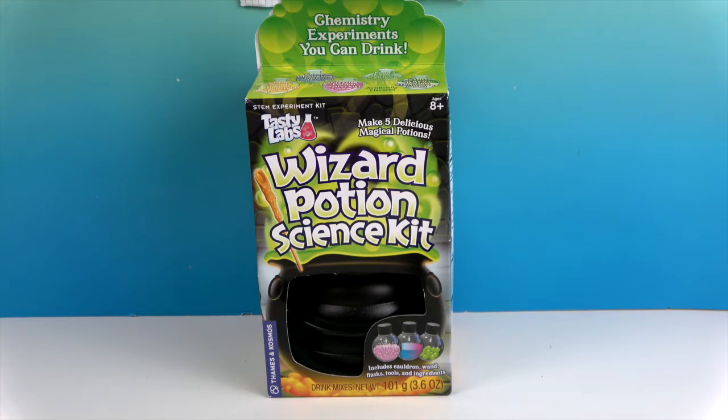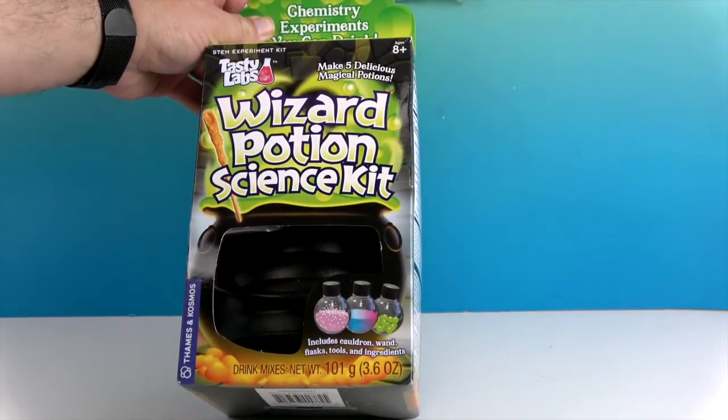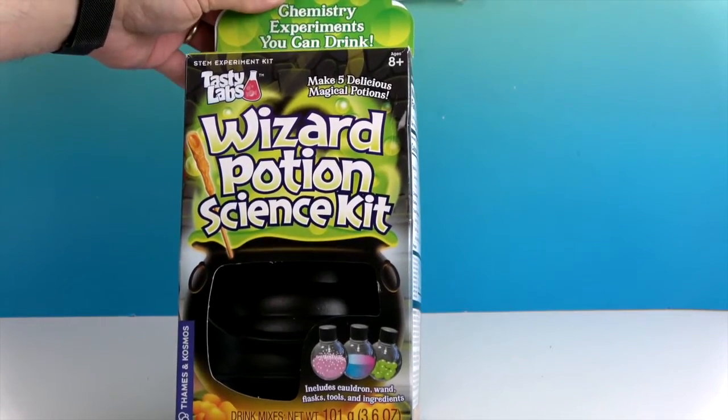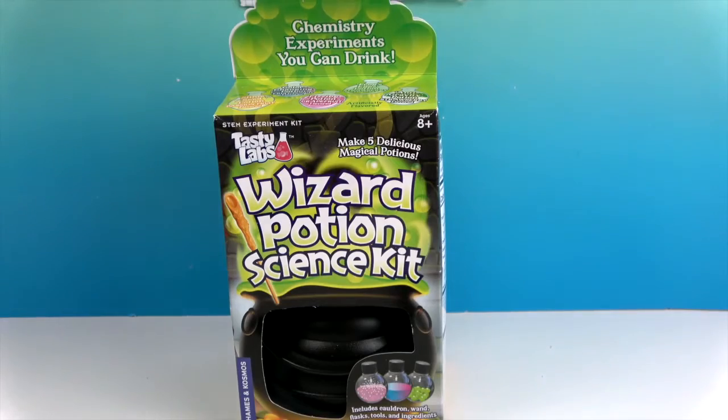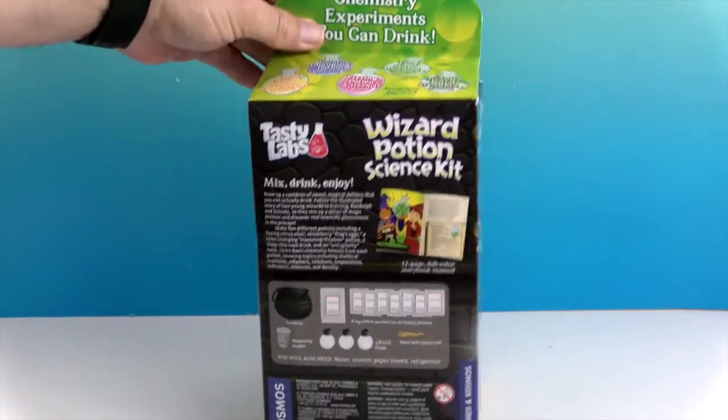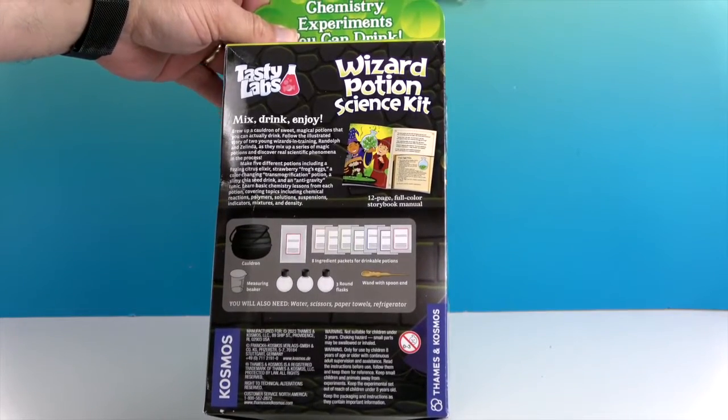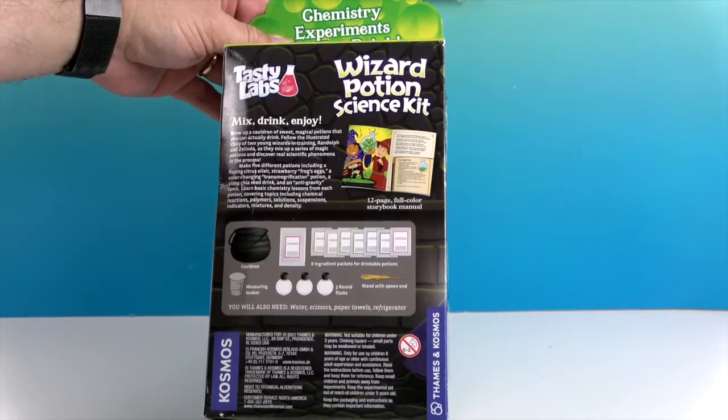We have chemistry experiments you can drink. There are five delicious magical potions. It comes with a cauldron, wand, flask, tools and ingredients. Let's turn it around and see what's on the back. It shows what it comes with.